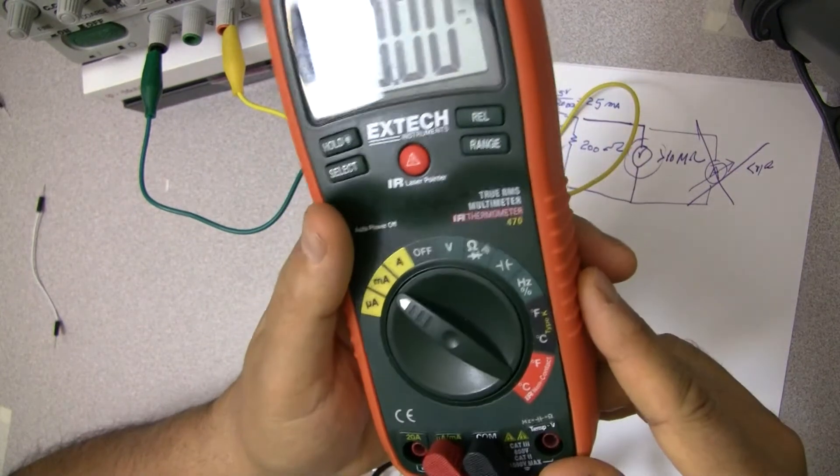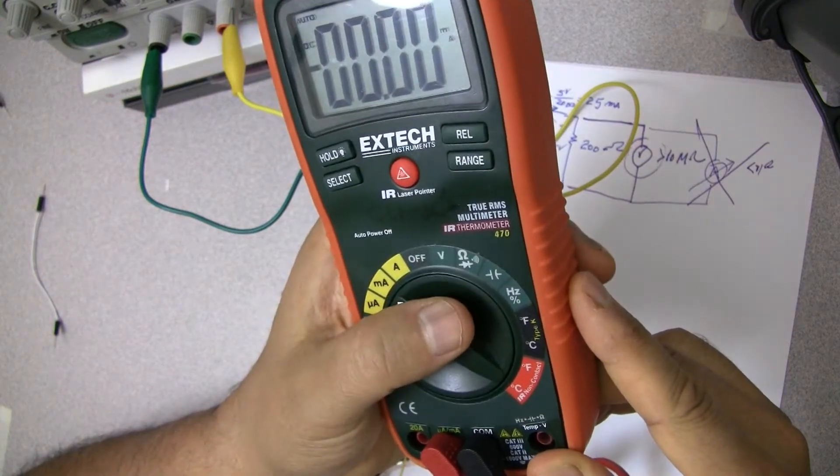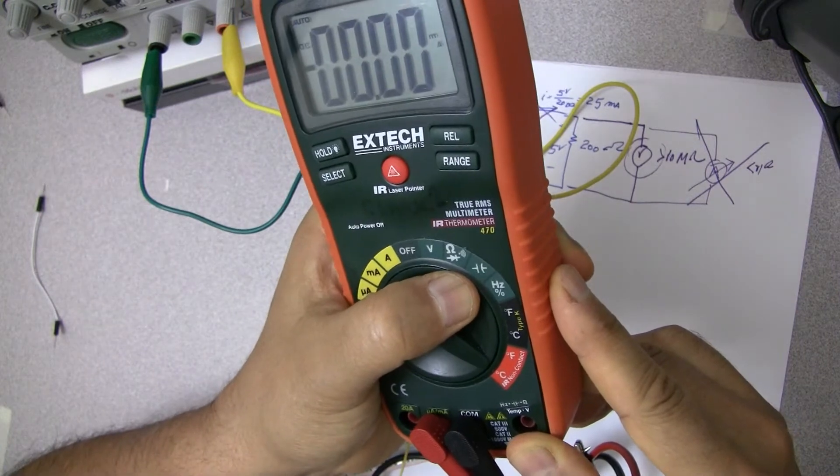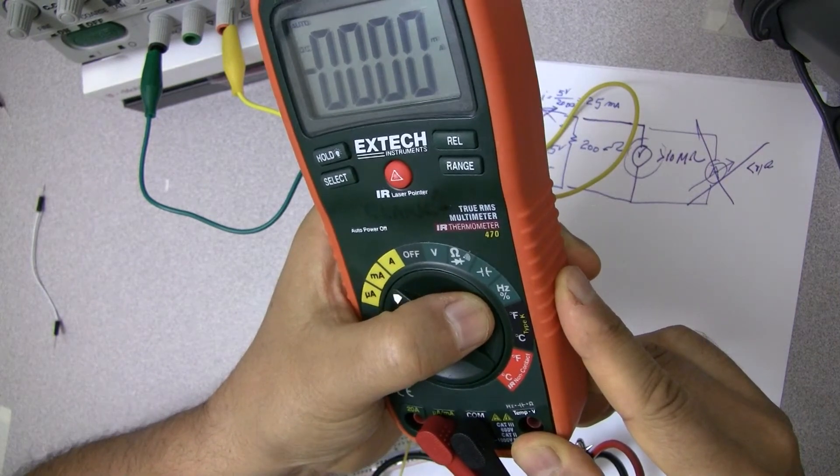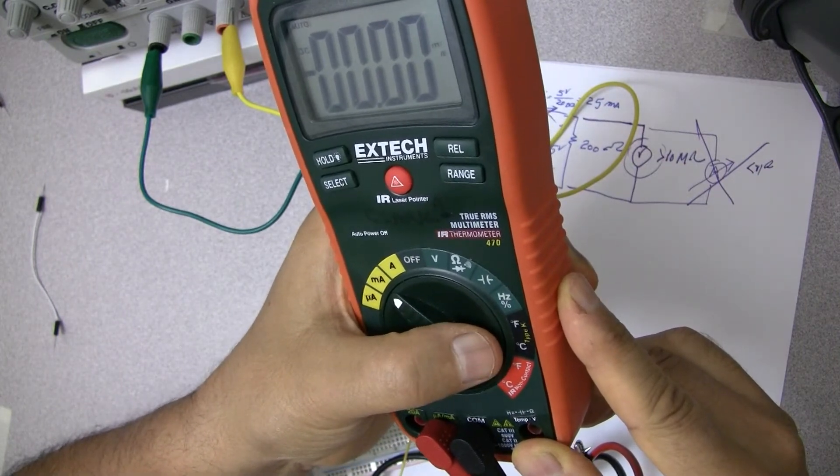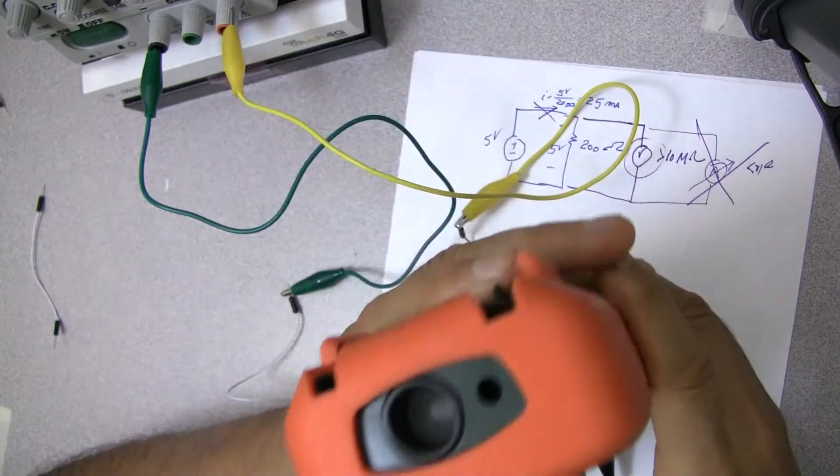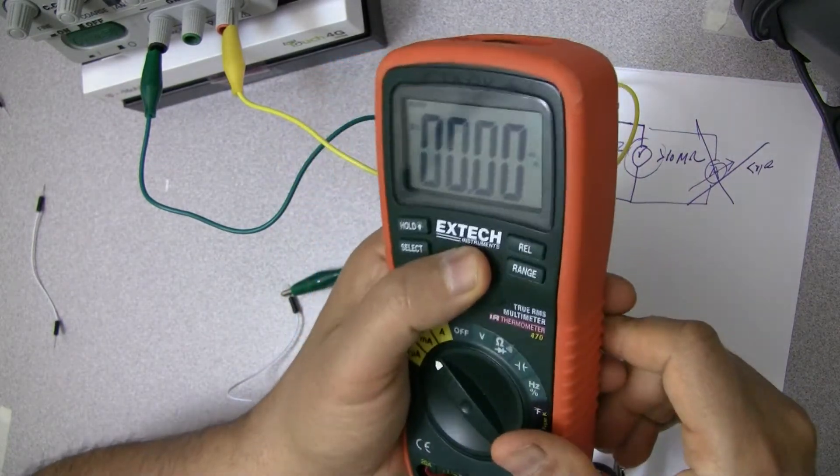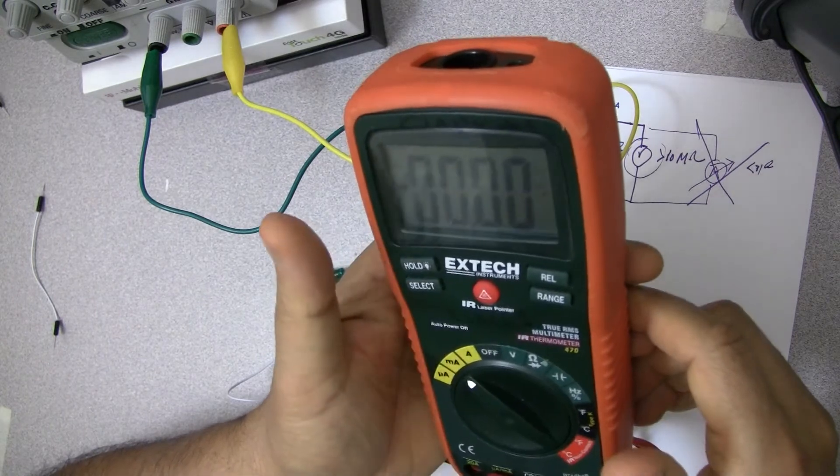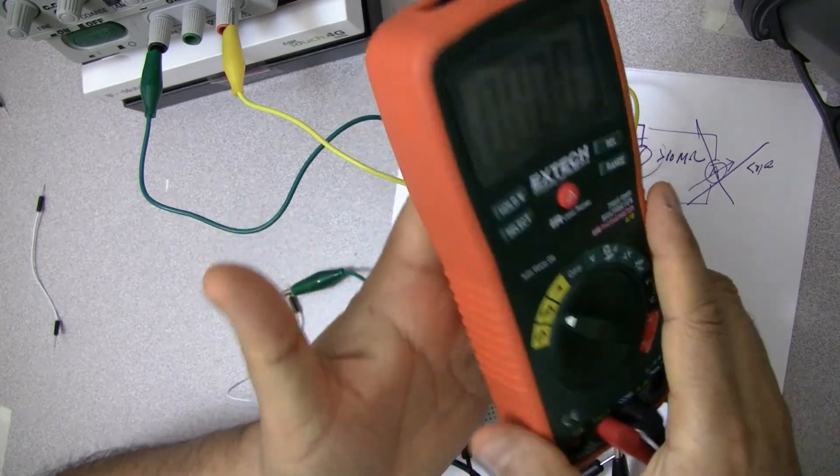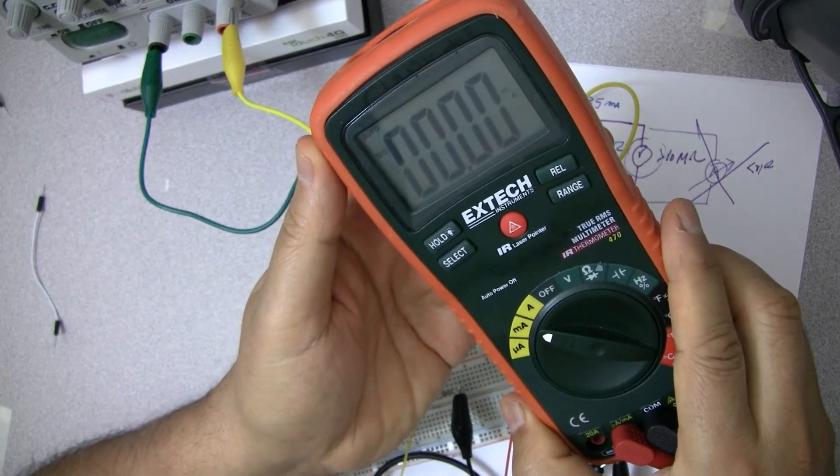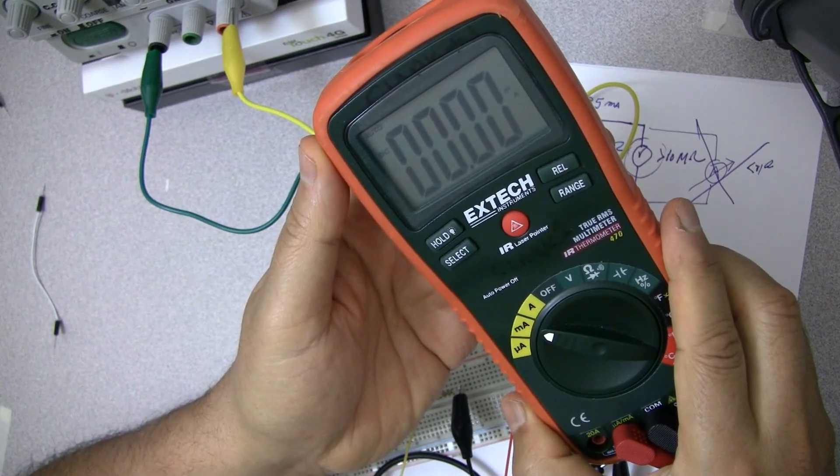Now this particular multimeter, not all are, but this particular one is capable of measuring capacitor, measuring frequency and measuring temperature, both of all kinds of temperature. And this one even has a little laser that you can shoot to measure the temperature of things that you cannot get close to. All nice things. So it's got an IR on it. This brings us to the end of the intro of multimeter. And look forward to seeing you on the next video.